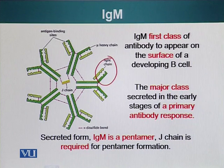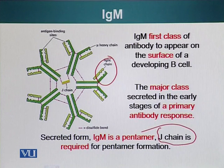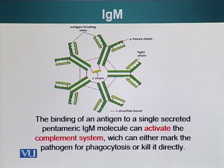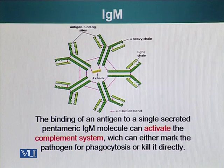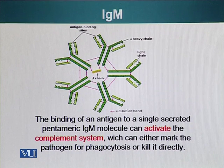To form this pentamer, another type of protein is required — the J-chain — which helps join the five IgM molecules. The binding of a single antigen to a secreted IgM pentamer can activate the complement system, a group of secreted proteins that assist the immune response. These proteins can either kill the offending pathogen directly or mark it for phagocytosis by phagocytic cells.